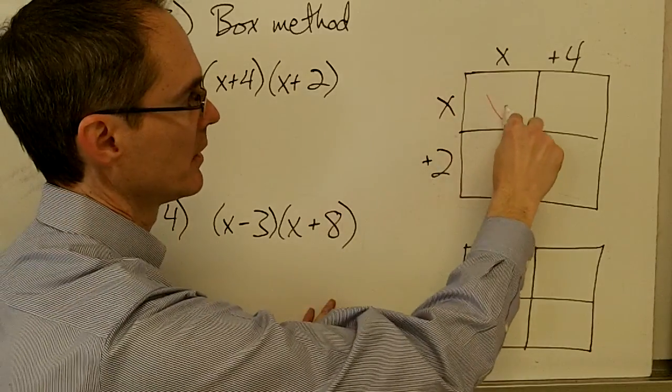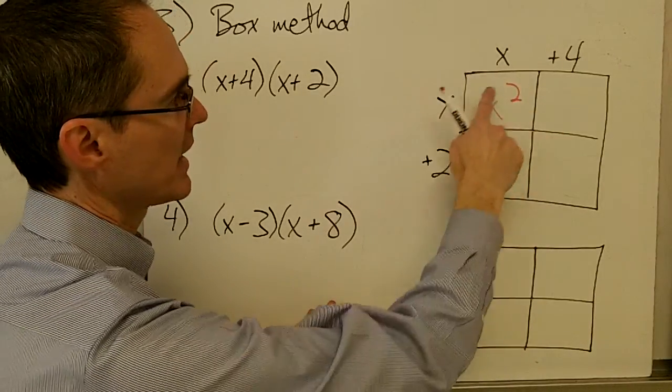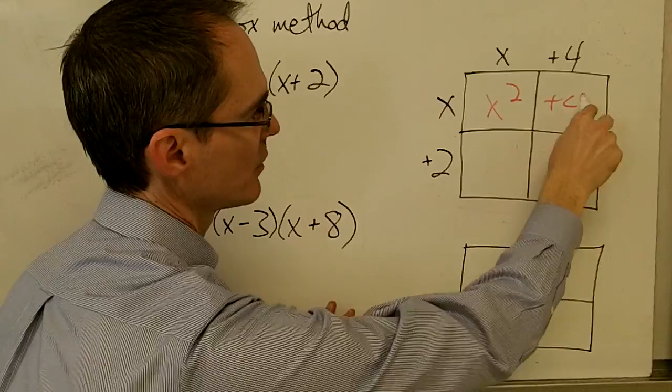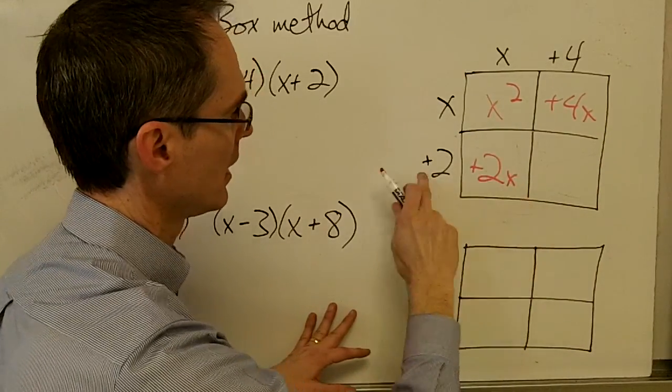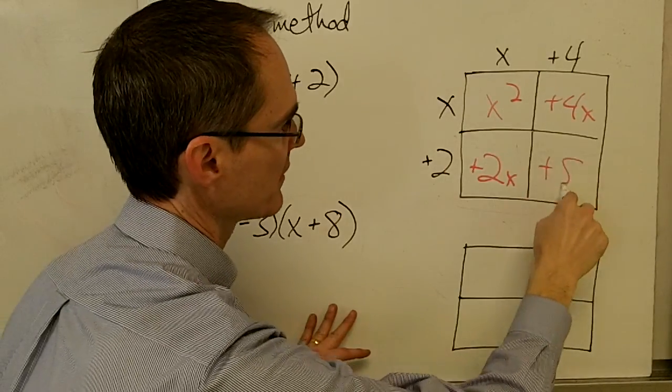So x times x, that's x squared. x times positive 4, that's positive 4x. x times positive 2, that's positive 2x. And positive 2 times positive 4, that's positive 8.